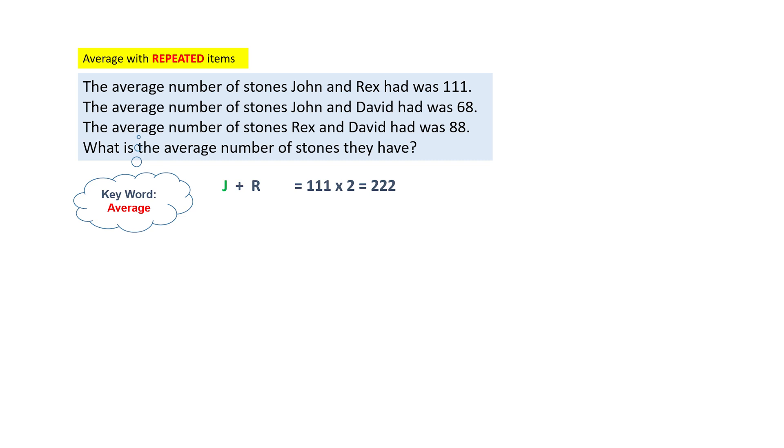And the second sentence says, the average number of stones John and David had was 68. So you will write J plus D equals to 68 times 2, which is 136.